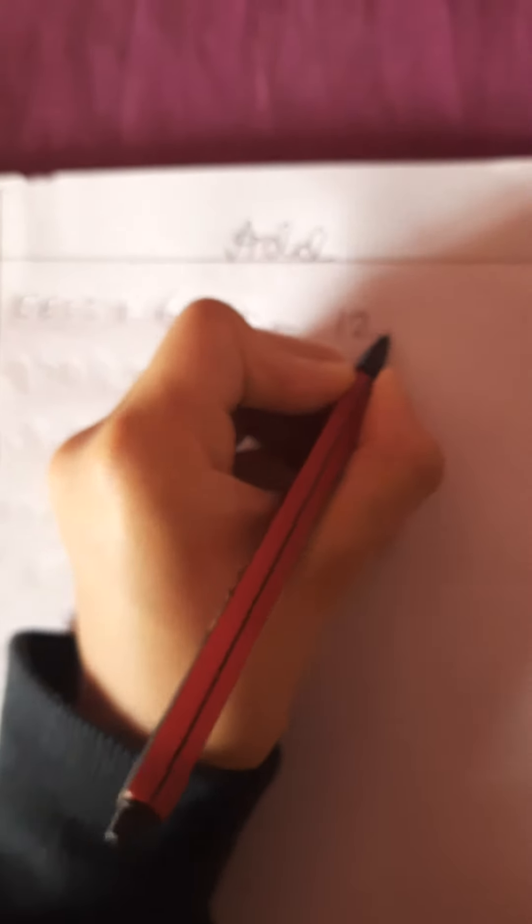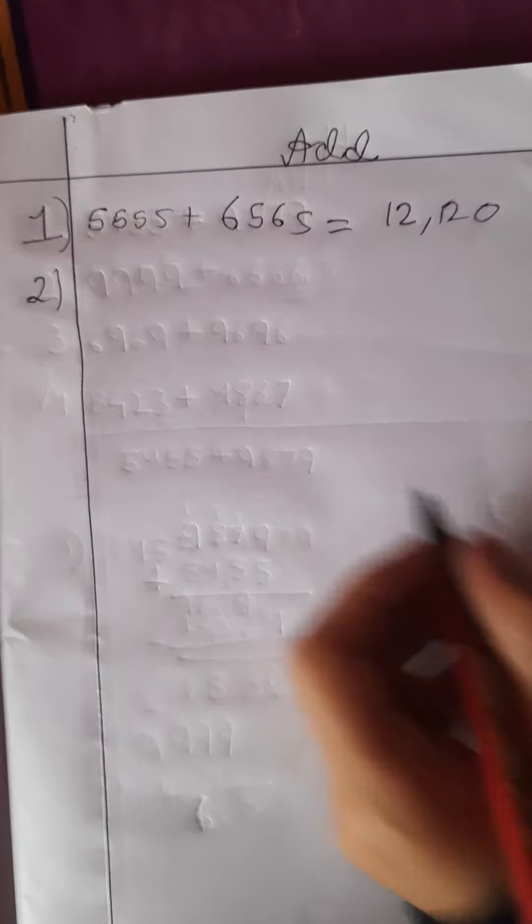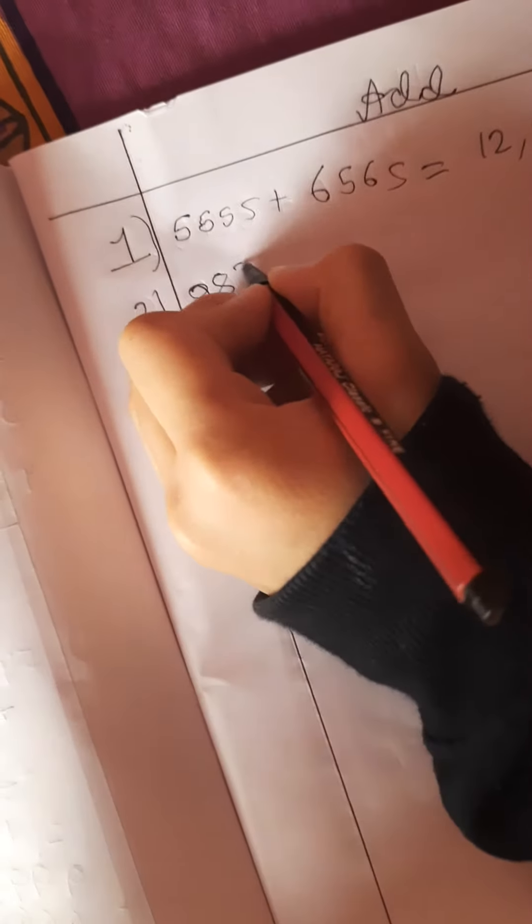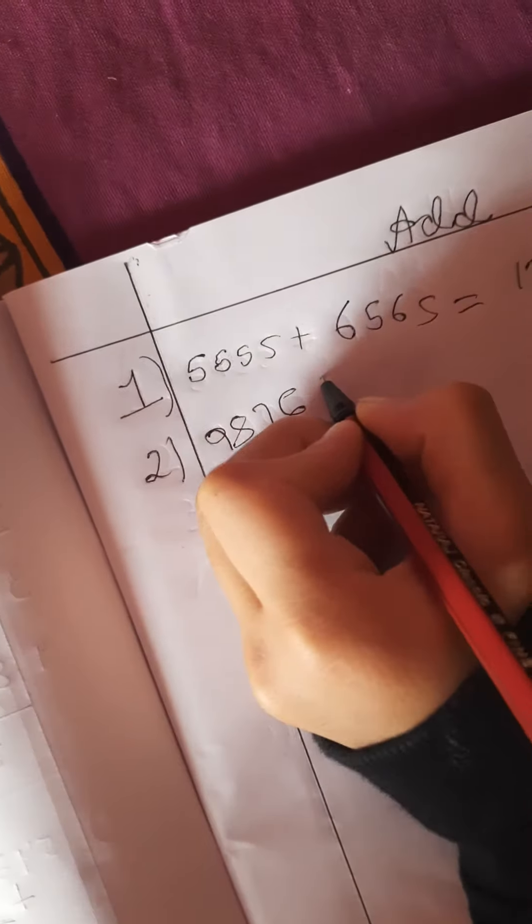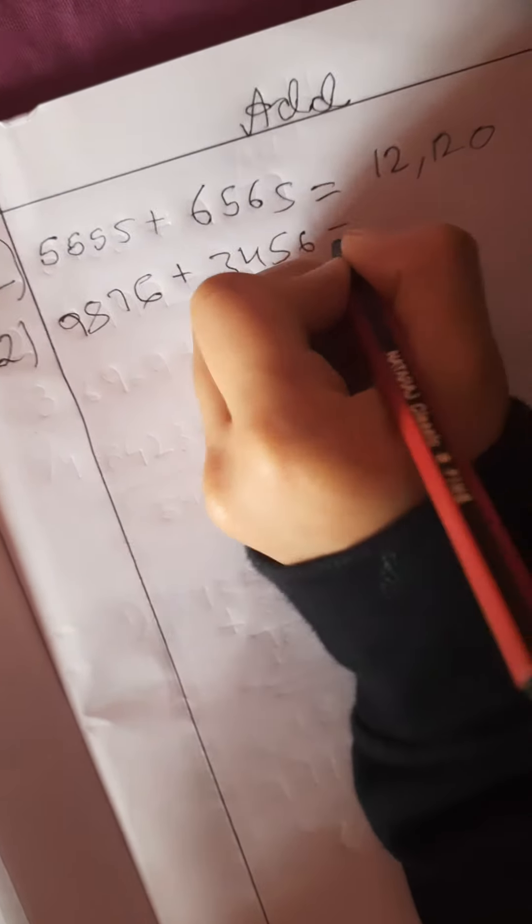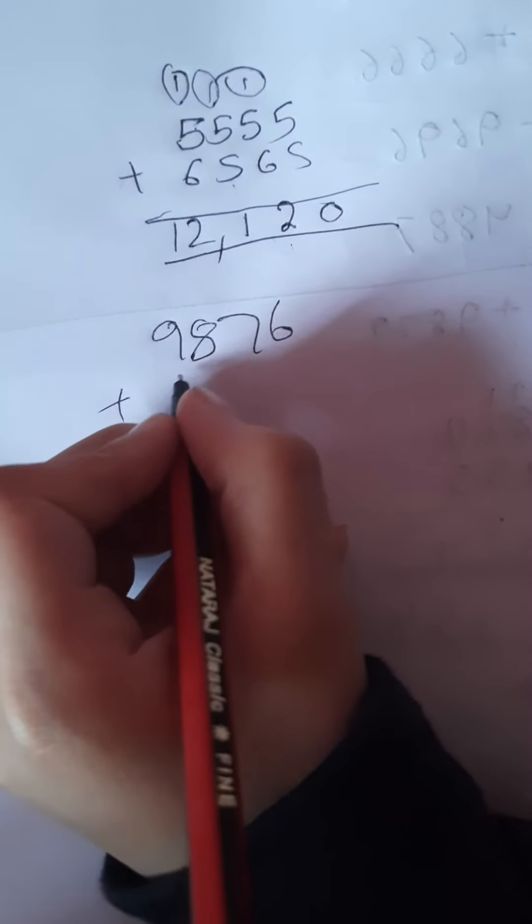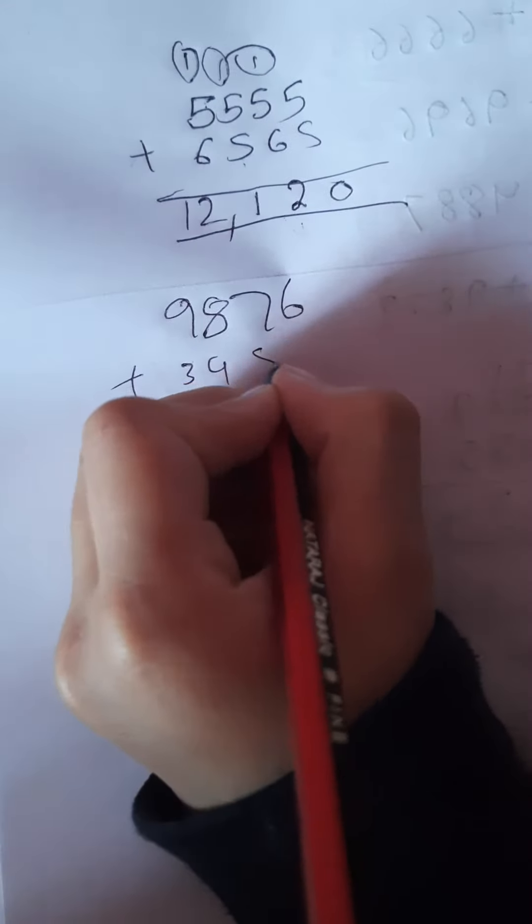So let's write another one. This equals to 12,120. So guys, this is the answer. So let's write the second one. This is 9876 plus 3456. This equals to, let's write. Let's go to borrowing page. Now this is 9876 plus 3456.